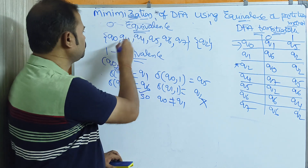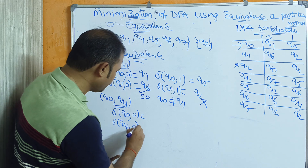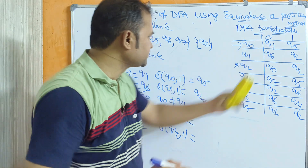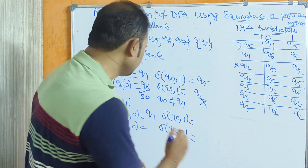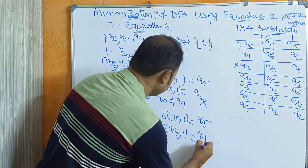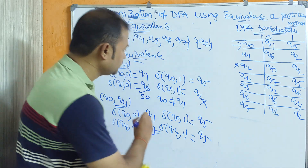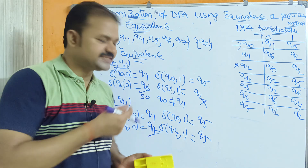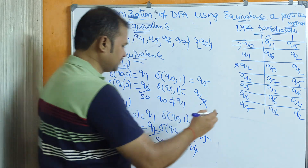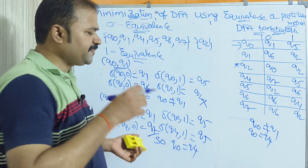Next compare Q0 with Q4: delta(Q0, 0) = Q1, delta(Q4, 0) = Q7; delta(Q0, 1) = Q5, delta(Q4, 1) = Q5. Q1 and Q7 are present in the same set; Q5 appears as a single state in the same set. So we can say Q0 is equal to Q4, and we can place Q0 and Q4 in the same set.